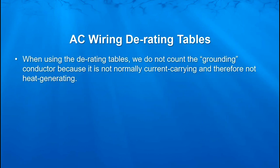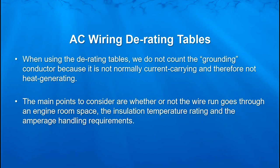When using the derating tables, the current-carrying conductors they're talking about do not count the grounding conductors. We do not count the green wire because it is normally not current carrying and therefore will normally not generate any heat. The main points to consider are whether or not the wire run goes through an engine room space, the insulation temperature rating, and the amperage handling requirements. If any part of that wire run goes through an engine space, it has to be rated to the lower engine space rating.